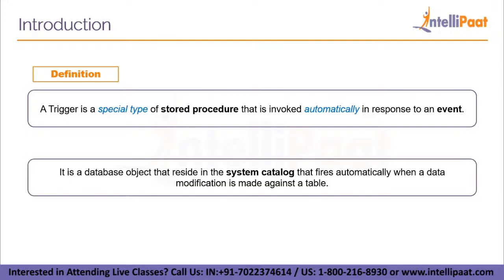There is also an alternative definition: a trigger is a database object that resides in the system catalog and fires automatically when a data modification is made against a table — that is, when an event occurs. Whenever we create something in the database, it is called a database object — be it a table, a view, a trigger, or a stored procedure. The system catalog, also called a data dictionary, is a place where you can store metadata like data types of attributes, table names, and attribute names. A trigger is stored in the system catalog and called or fired whenever necessary.